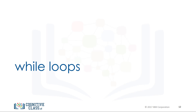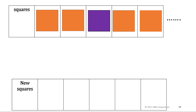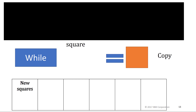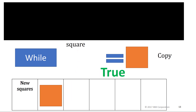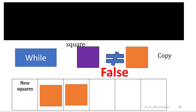While loops are similar to for loops, but instead of executing a statement a set number of times, a while loop will only run if a condition is met. Let's say we would like to copy all the orange squares from the list squares to the list new squares, but we would like to stop if we encounter a non-orange square. We don't know the value of the squares beforehand — we simply continue the process while the square is orange. If not, we stop. We check if the first square is orange — it satisfies the condition, so we copy it. We repeat for the second square, which also meets the condition. In the next iteration, we encounter a purple square — the condition is not met, so we stop the process.